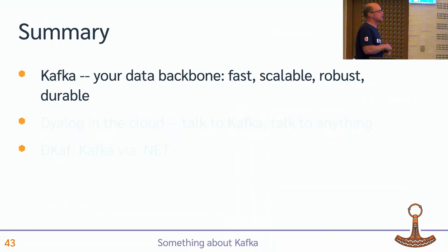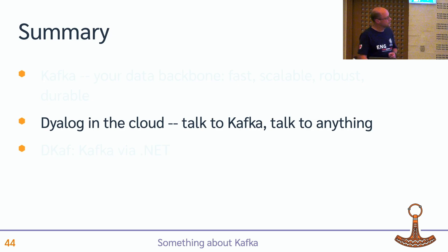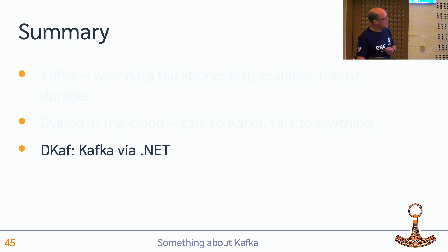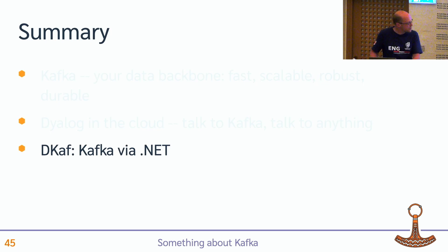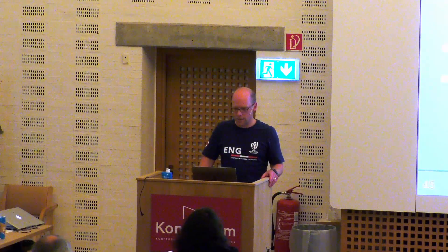So to wrap this up: I talked about Kafka, your data backbone — fast, scalable, robust, durable, supported everywhere. If you can speak to Kafka, you can speak to anything else that can speak to it, so it's a bit of a force multiplier for cloud applications. If you can get Dialog to talk to Kafka, you can talk to databases, enterprise buses — everything really has Kafka connectors nowadays. And I showed you how we can talk to Kafka using the .NET library, even though you had to jump through a couple of hoops to avoid the generics issue. That was all I had to say — if there's time left and any questions, I'm happy to take those now. Thank you.